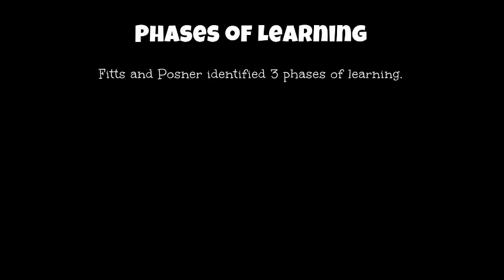Hi guys, this is the fourth Acquisition of Skills Screencast, and today we're going to be discussing the phases of learning. Two individuals called Fitts and Posner identified that we move through three different stages of learning when we learn a skill, and it always runs in order. The three phases are as such.